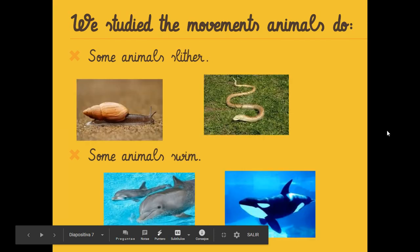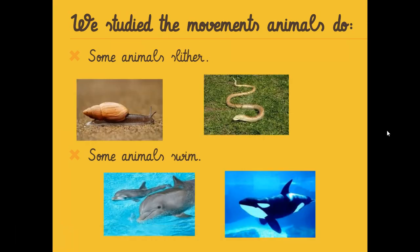We also studied that some animals slither — they go with the belly on the floor. For example, the snail and the snake. They don't have legs, so they can't walk and they can't run.